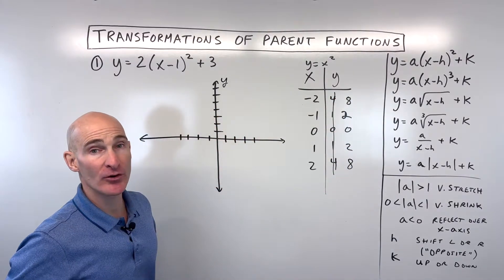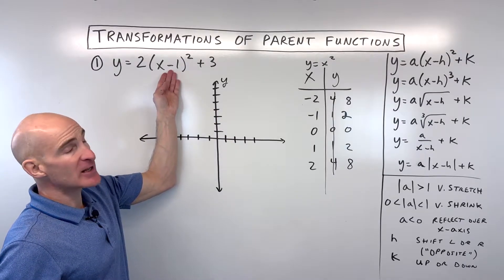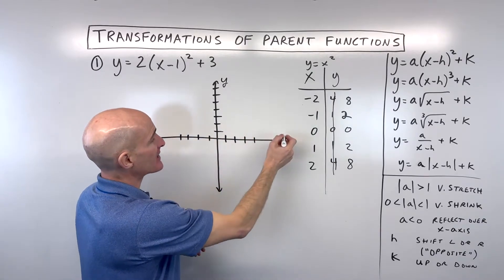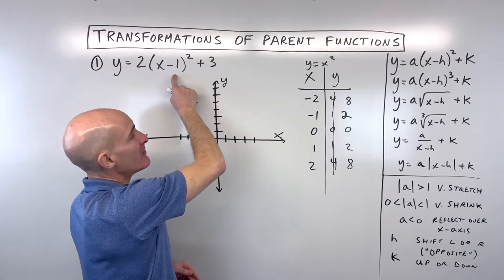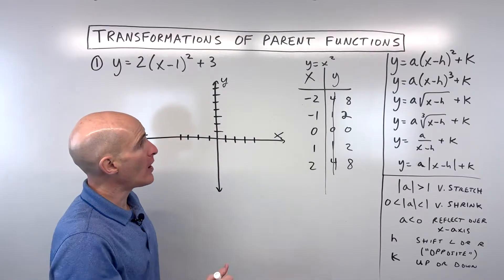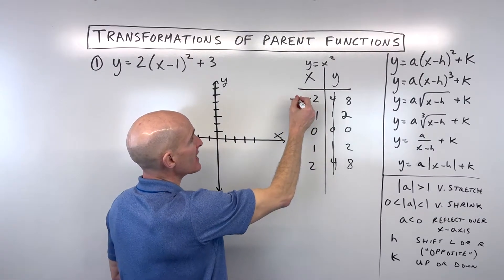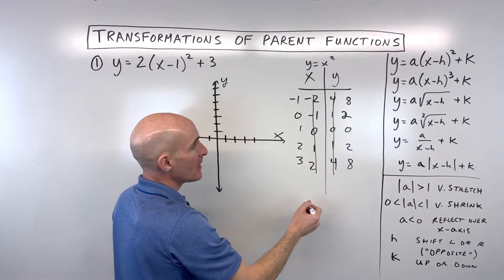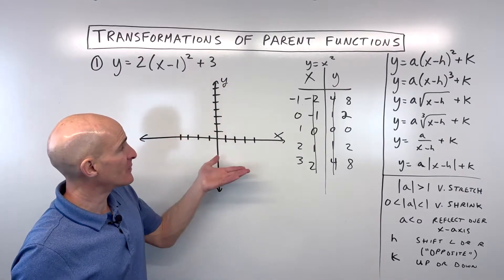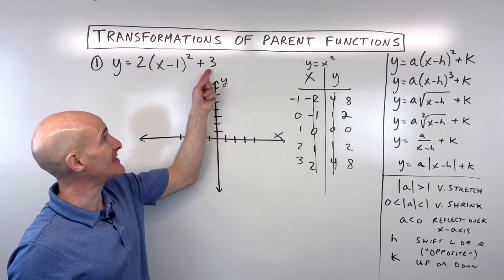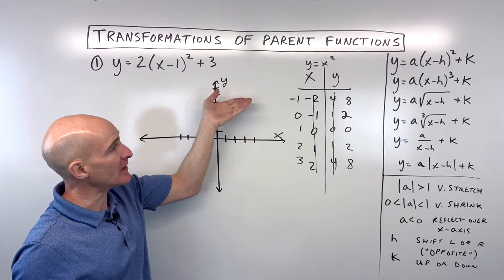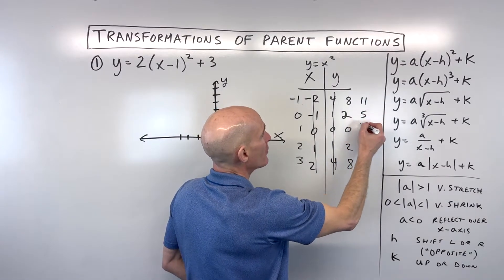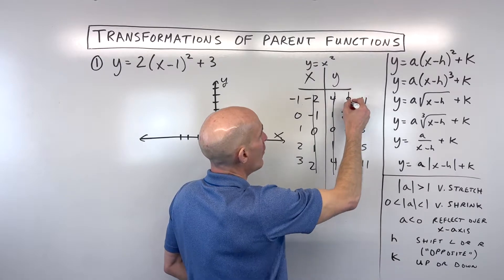The minus 1 is grouped with x, so it has the opposite effect — instead of shifting left 1, it shifts right 1. Add 1 to all x values. Then the plus 3 is not grouped with x, so it affects the y direction with the same effect: plus 3 shifts the graph up 3. Add 3 to all y coordinates.